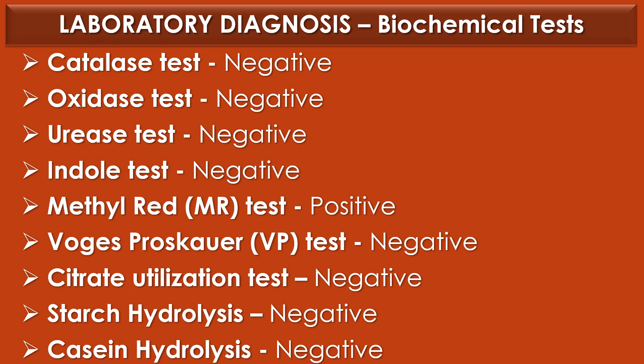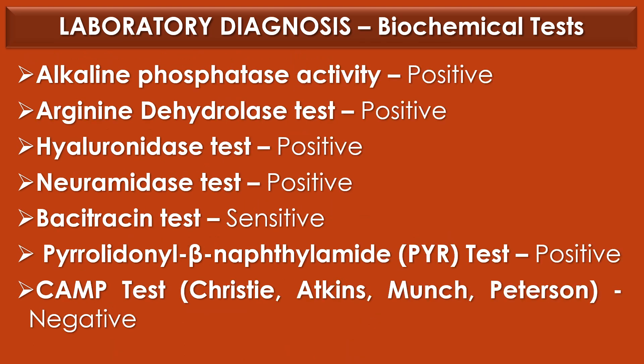Biochemical tests for Streptococcus pyogenes: Catalase test — negative; Oxidase test — negative; Urease test — negative; Indole test — negative; Methyl red test — positive; Voges-Proskauer (VP) test — negative; Citrate utilization test — negative; Starch hydrolysis — negative; Casein hydrolysis — negative; Alkaline phosphatase activity — positive; Arginine dehydrolase test — positive; Hyaluronidase test — positive; Neuraminidase test — positive; Bacitracin sensitivity test — sensitive; PYR test — positive; CAMP test — negative.